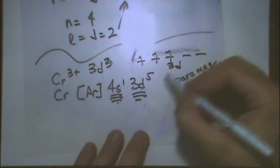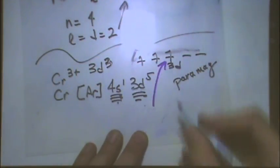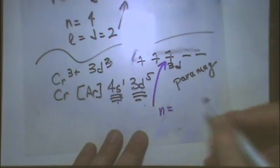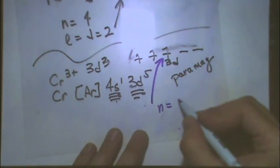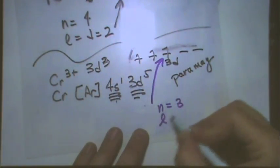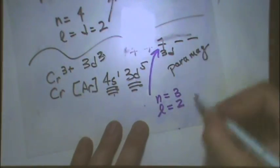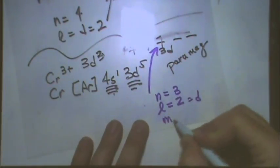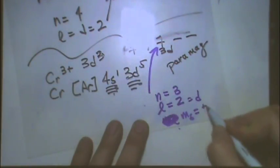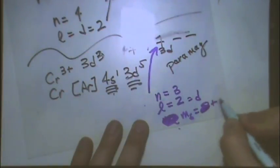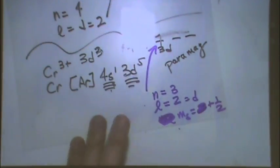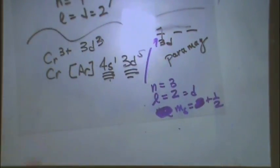Another type of question we could ask you here, let's take this electron right there. What's N? 3. What's L? 2 because it's D. And M sub S. It's positive one half. That's another kind of common question.